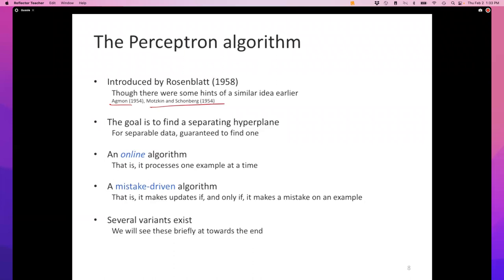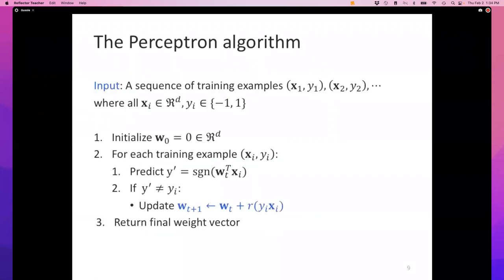One of the really amazing things about the perceptron algorithm is how simple it is. The proof of how simple an algorithm is is whether it can fit on one slide, and this one is so simple. I'll walk you through this. The input to the algorithm is a sequence of training examples, x_i, y_i. x_i is a d-dimensional real-valued vector and y_i is minus one or plus one because we're still working with binary classification.